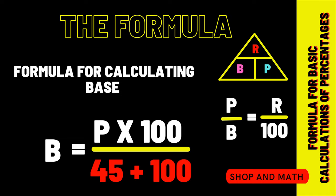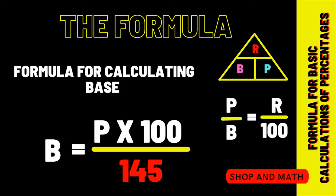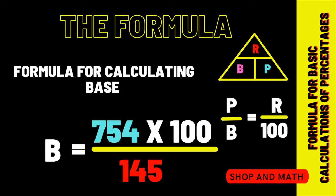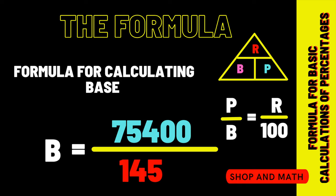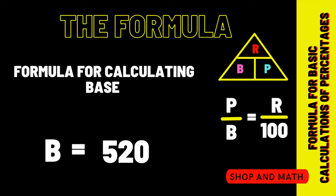Our rate is 100% plus 45, so therefore our rate is 145. Our percentage is 754. Let's solve the equation: 754 times 100 is 75,400 divided by 145 equals 520. Therefore, our base is 520.